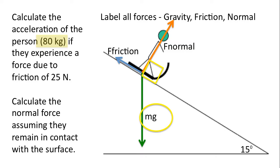Let's determine the force of gravity by using the formula mg. The mass is 80 kilograms. 80 multiplied by 9.8 is 784 newtons. Friction is 25 newtons, so we'll label that as well.